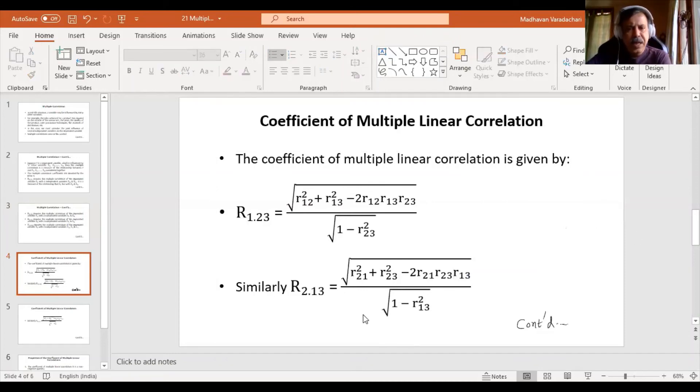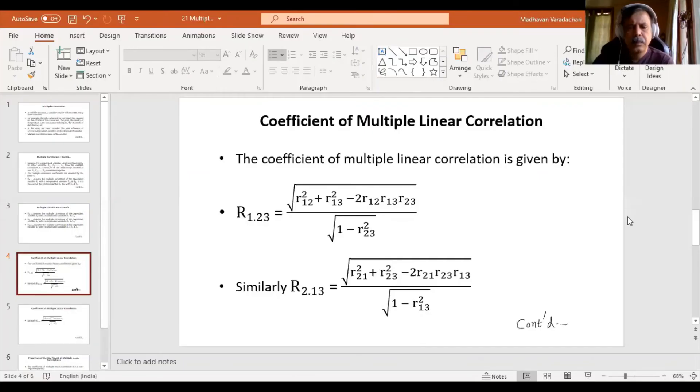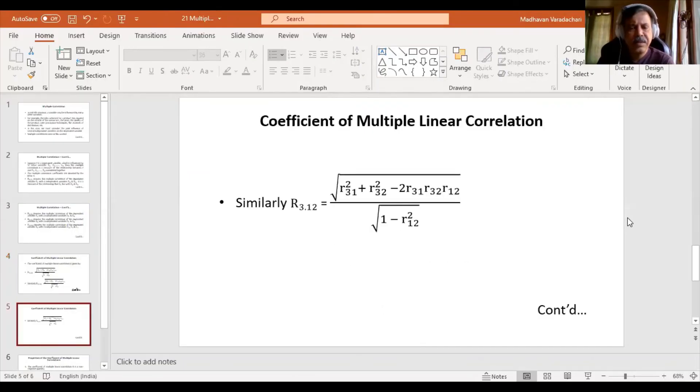And then denominator will be this 1 and 3. Same way, if you see R3.12, we have the combination 31 and 32. So r31 the square, r32 the square minus r31, 32 and 12. So all those 3 combinations divided by 1 minus r, after the dot, 12 the square.